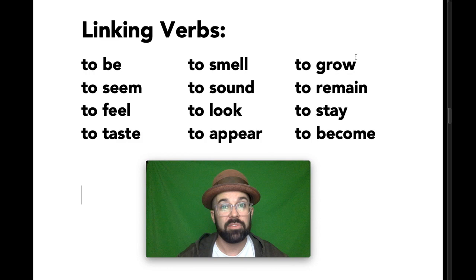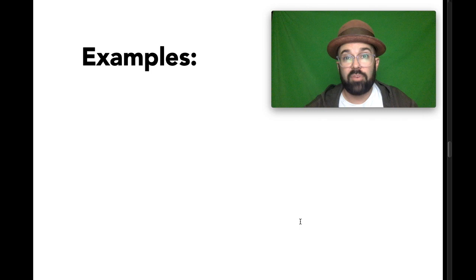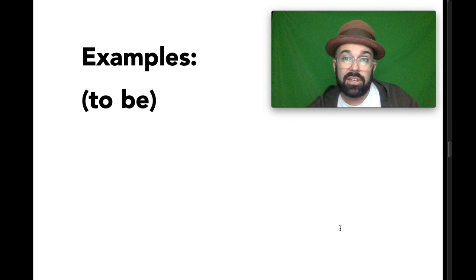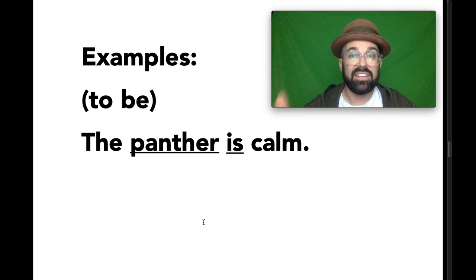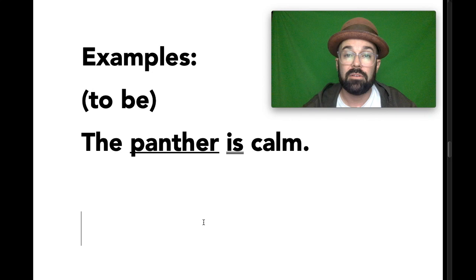Now that you've written down the infinitive form of all of those linking verbs, let's look at a few examples, starting with to be. To be is the ultimate linking verb. The first example: 'The panther is calm.' We're using the verb to be in its present tense with a singular subject — the word 'is.' Panther is the simple subject. The predicate is 'is calm.' The word calm in the predicate, after the verb, is linked to the subject. Calm is describing the panther — it is a calm panther — so 'is' is just a linking verb connecting those two things.